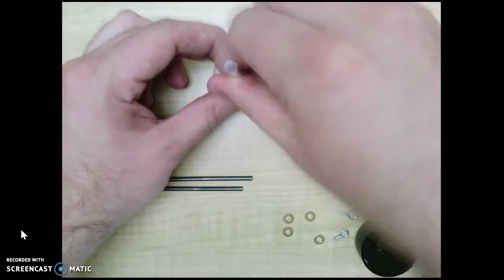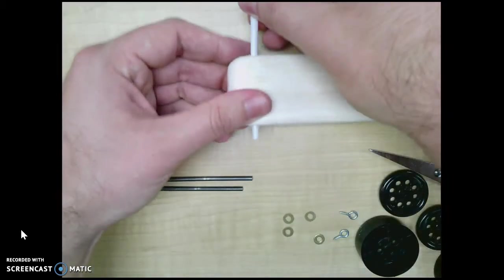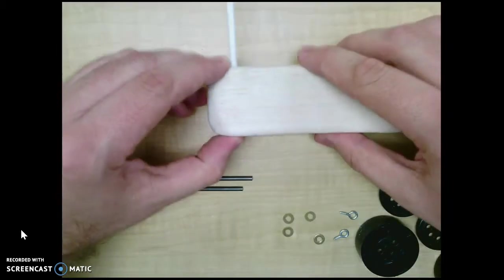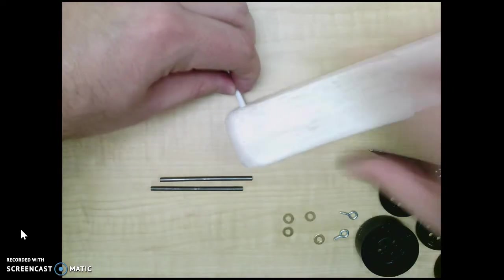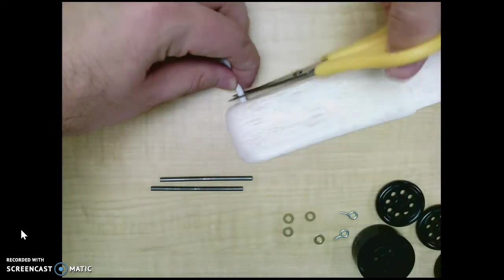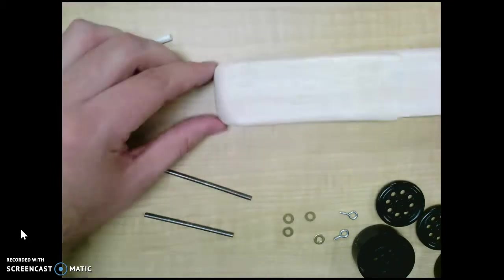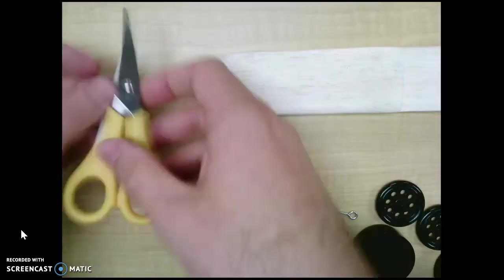So now I'm going to go to the other end, put the straw through, and make it flush. Pull it out a little bit, cut out the excess. And then make sure it's flush on this end, which it is. So we're good with that.